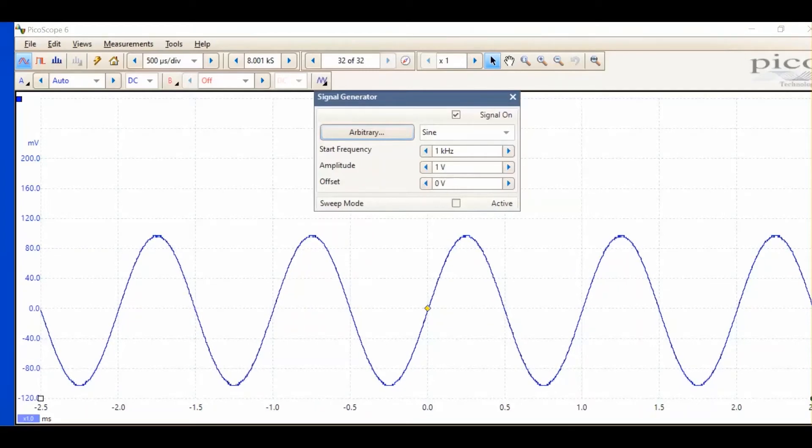As a demonstration, I want to create a glitch amongst a set of regular pulses so that I can use it to show some of the advanced trigger features.